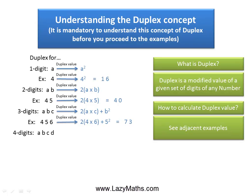For a four digit number, as in A, B, C and D, the duplex value is given by 2 times A times D, the first and the last digit, plus 2 times B times C, the middle two digits.